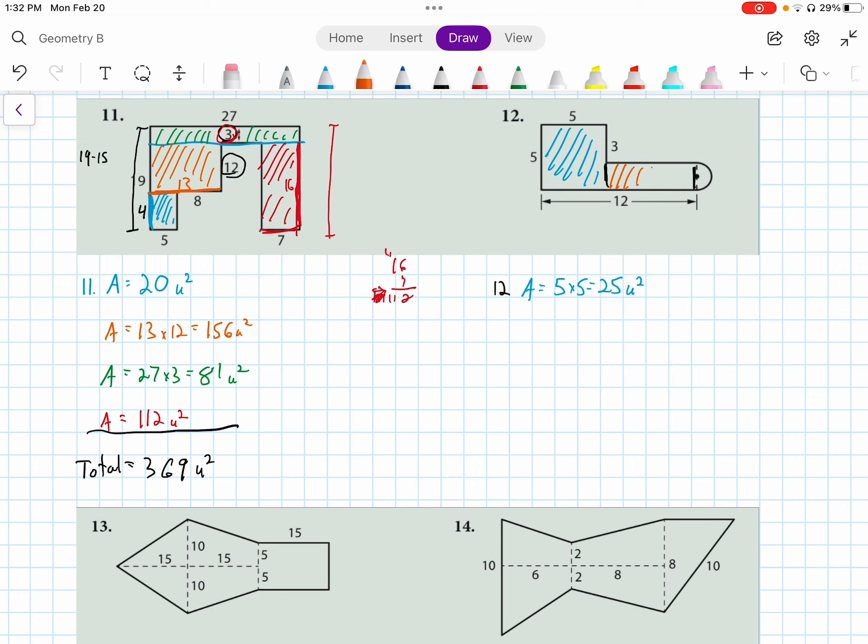This rectangle here, using the fact that this length is 5 and this is 3, this small length over here is not 3, it's 5 minus 3, so it's 2. And then we have 12 minus 5 gives us 7, so the area of the orange rectangle is base times height, so that's 14 units squared.